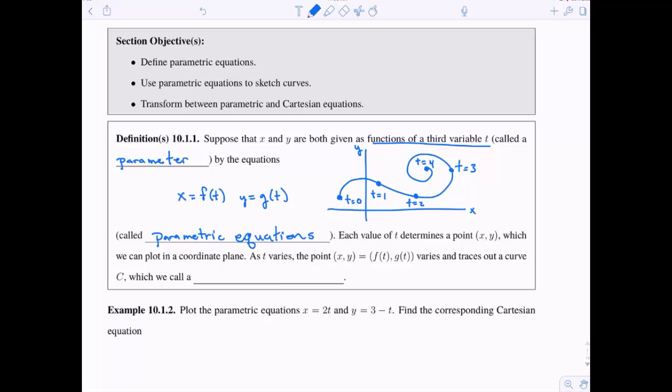And we can plot in the coordinate plane, which we just did here. As t varies, our point varies, and it traces out the curve. Altogether, we call this thing a parametric curve.